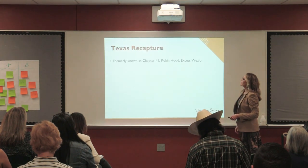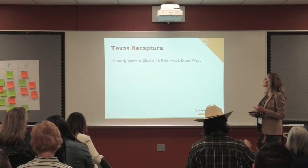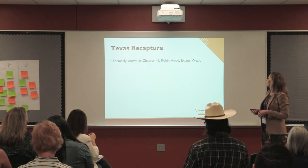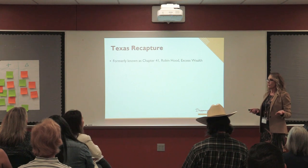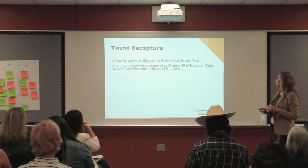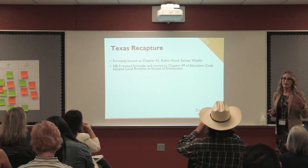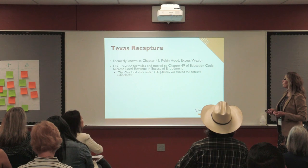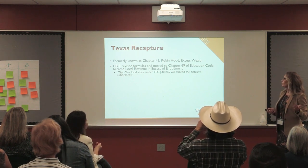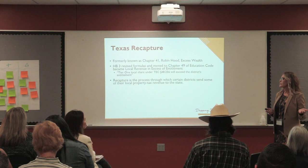Texas recapture — this used to be known as Chapter 41. For those who grew up with Chapter 41, it's really hard to change the terminology. It's also been called Robin Hood because it was stealing from the rich districts to give to the poor. It's not exactly working that way anymore. It used to be measured by excess wealth per student. House Bill 3 in 2019 really changed all of this, moved it to Chapter 49, and it became local revenue in excess of entitlement. So it's no longer a measurement of wealth per student, but a measurement of how much excess revenue you have above your entitlement — your Tier 1 local share. Recapture is the process where certain districts send some of their tax collections back to the state.